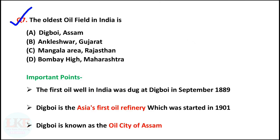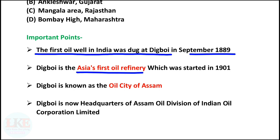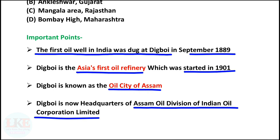Question number 7 — very important: the oldest oil field in India is Digboi in the state of Assam. The first oil well in India was dug at Digboi in September 1889. Digboi is Asia's first oil refinery, which was started in 1901. Digboi is known as the oil city of Assam and is now the headquarters of the Assam Oil Division of Indian Oil Corporation Limited.